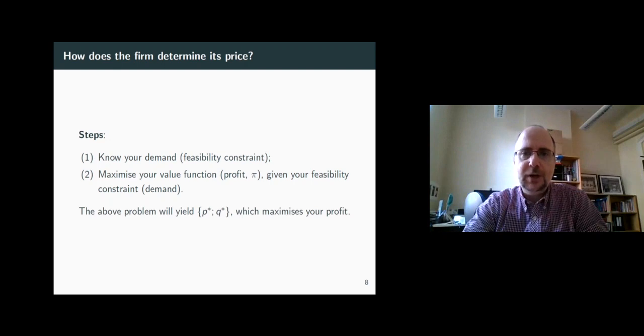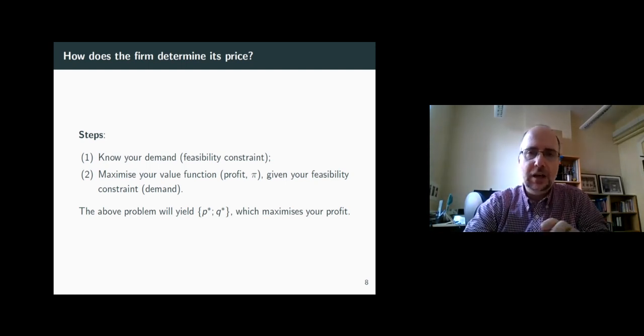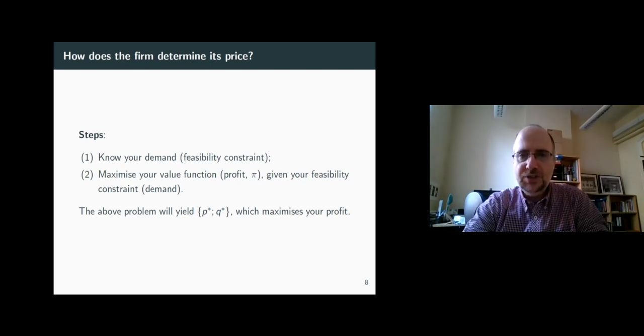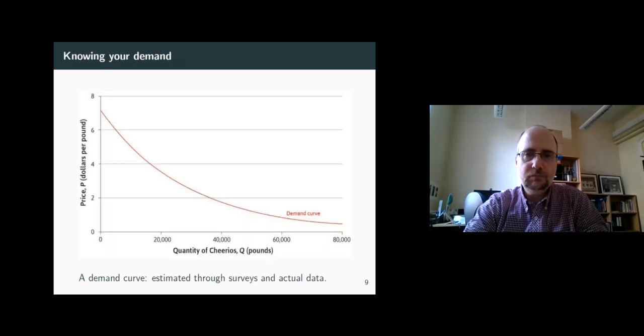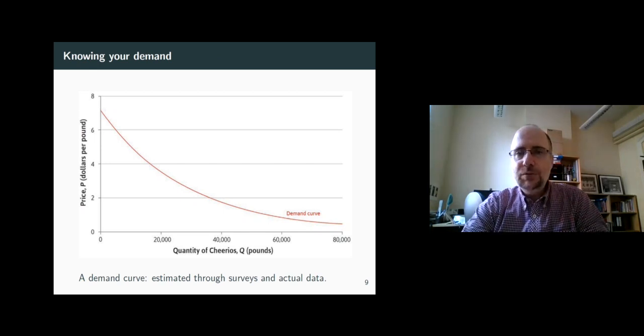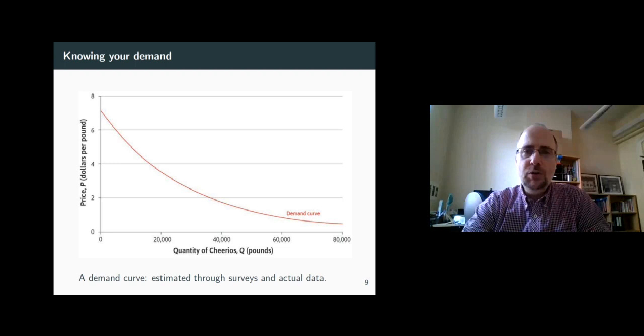Subject to the demand constraint which is known in advance. Your marketplace, right? So as a result of this maximization process, you will know a very important combination of a price and a corresponding quantity which maximize your profit. P star and Q star here stand for the profit maximizing price and quantity. So let's go through the moves that a firm makes then.